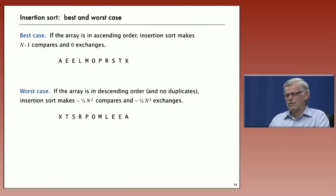So in the first case, it's much faster than selection sort, linear instead of quadratic. In the second case, it's slower than selection sort because it uses about the same number of compares, but it uses many more exchanges.